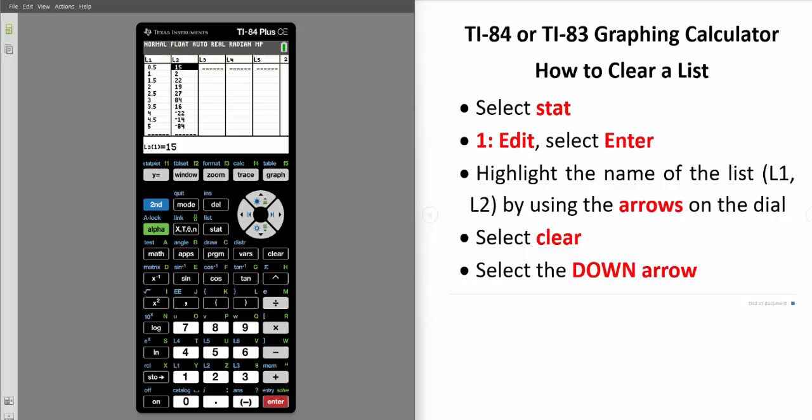And let's clear the data out of both columns. To clear the data from List 1, use the arrows on your dial key to highlight the name of the column. In this case, L1. Select the Clear button and then select the down arrow button. And there we have it. The data has been removed from the first list.